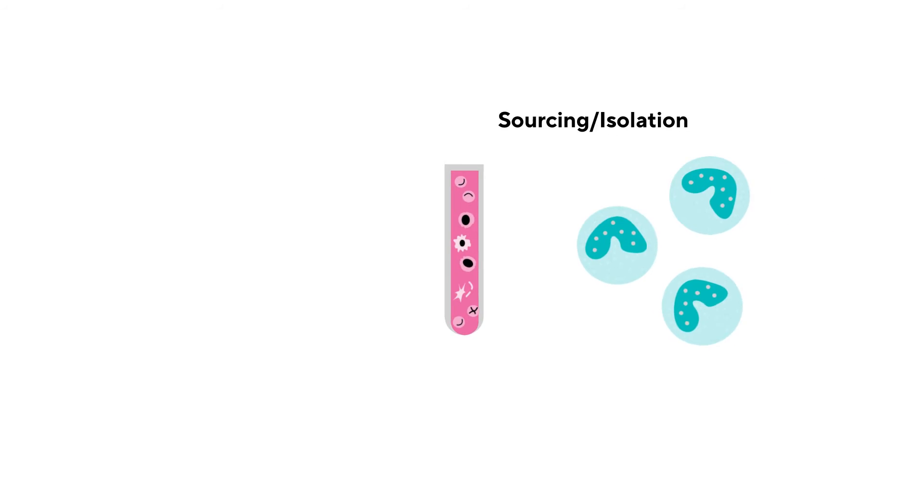Let's take a look. Sourcing and Isolation: First, source and isolate by obtaining representative cells for reprogramming.